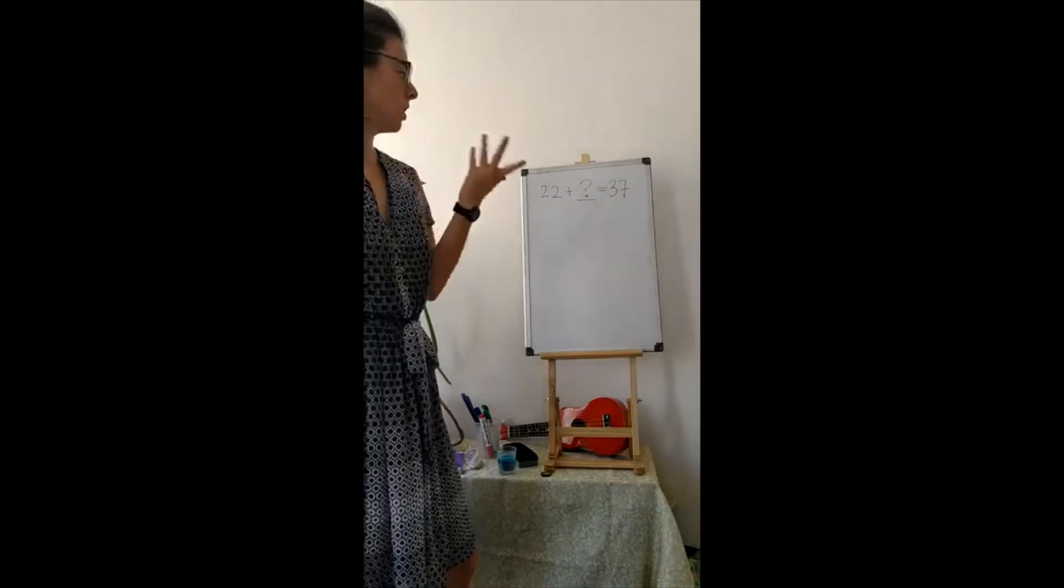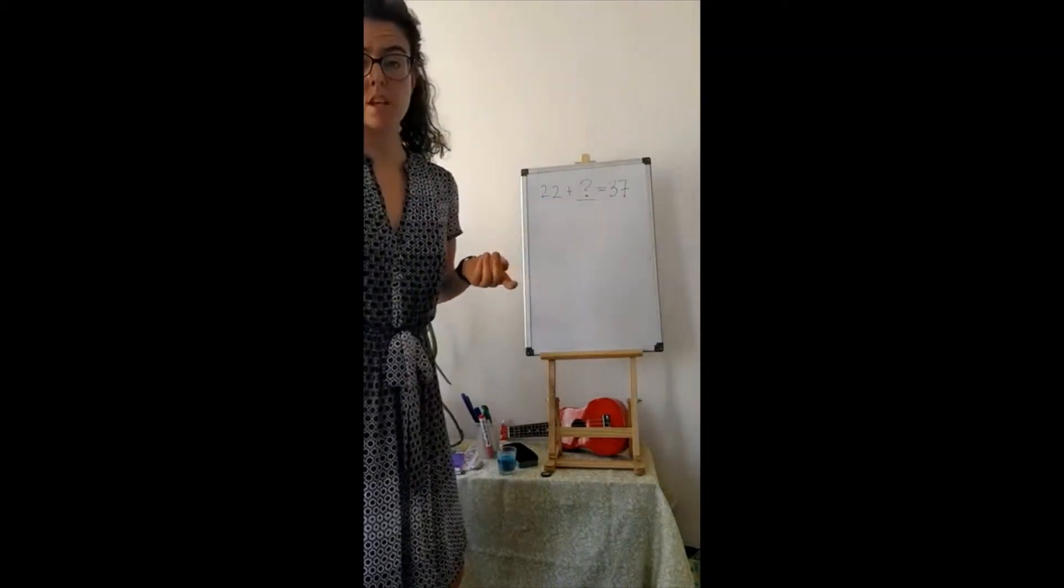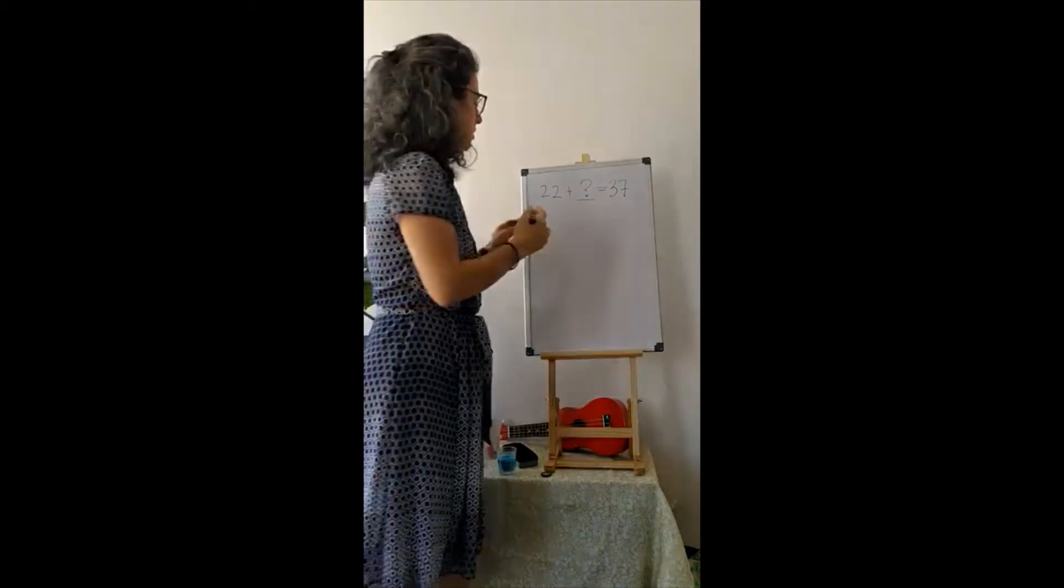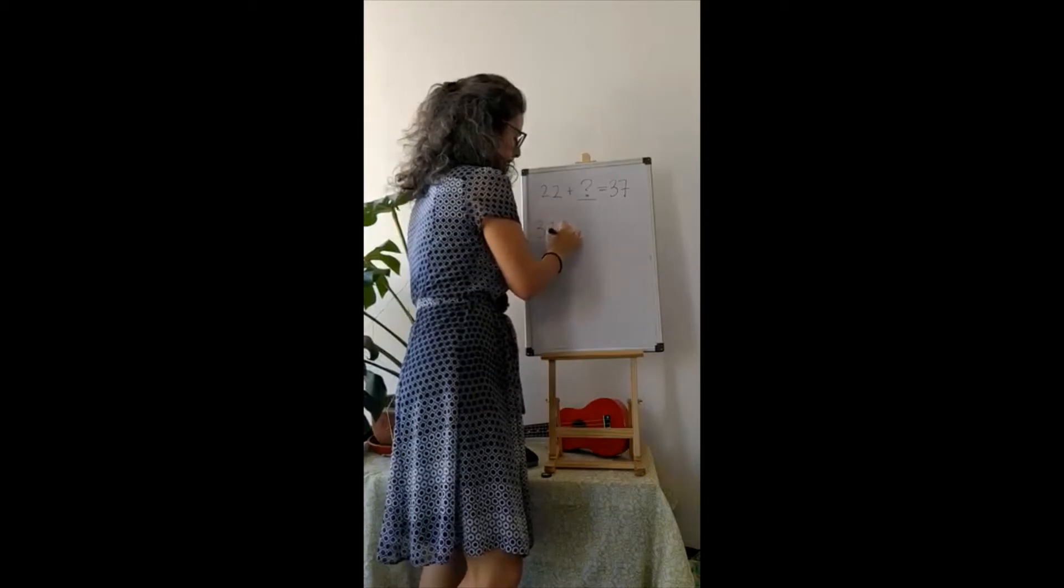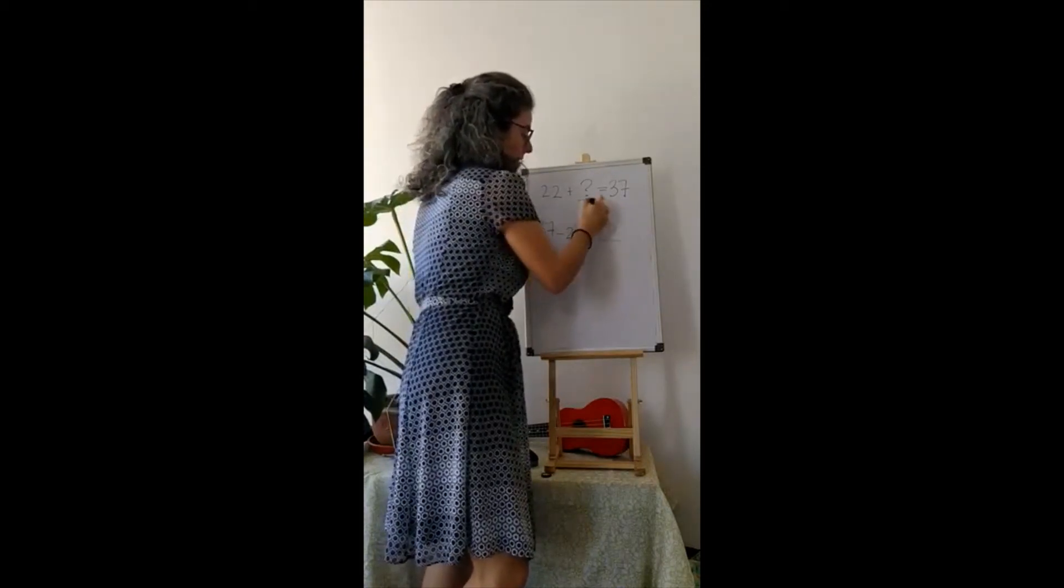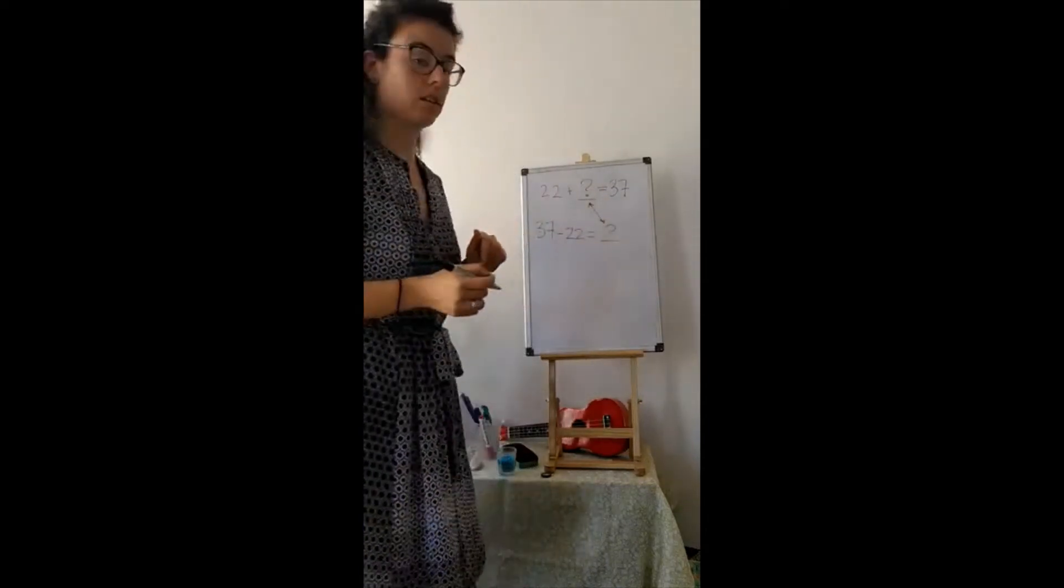Hmm. We could make a number line and count all of our hops, or let's try with subtraction. So thirty-seven minus twenty-two is equal to, and this number is going to be what we put there.